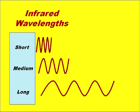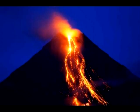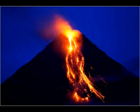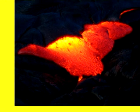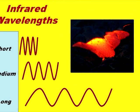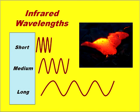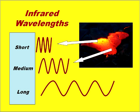All objects emit IR radiation, but the amount and range of wavelengths change depending on the temperature of the emitter. The bright yellow portion of this lava is emitting mostly short-wave infrared; the red and orange portions mostly emit medium-wave infrared.